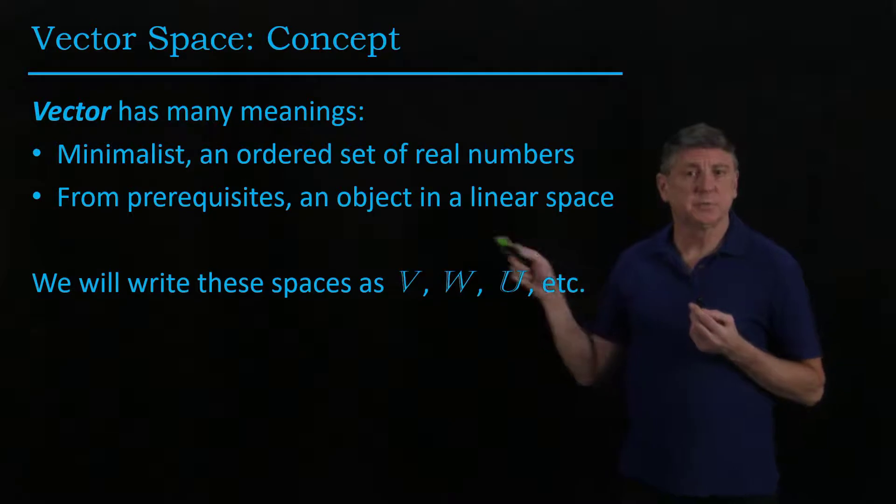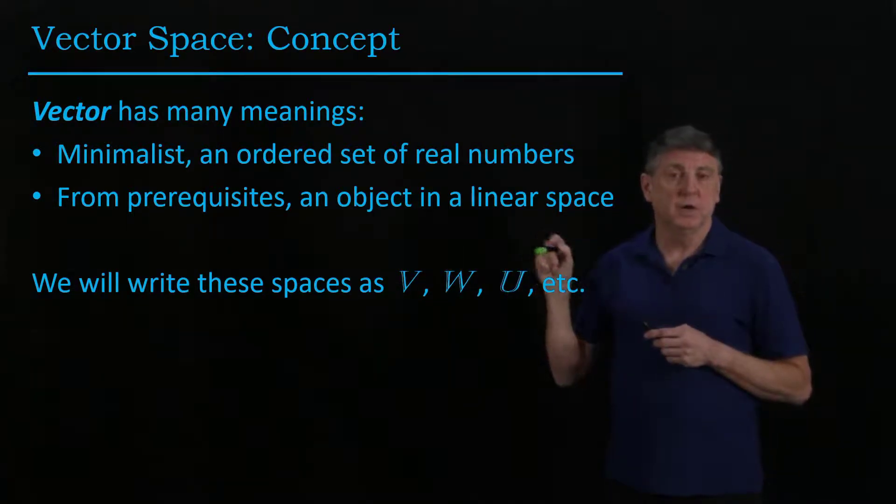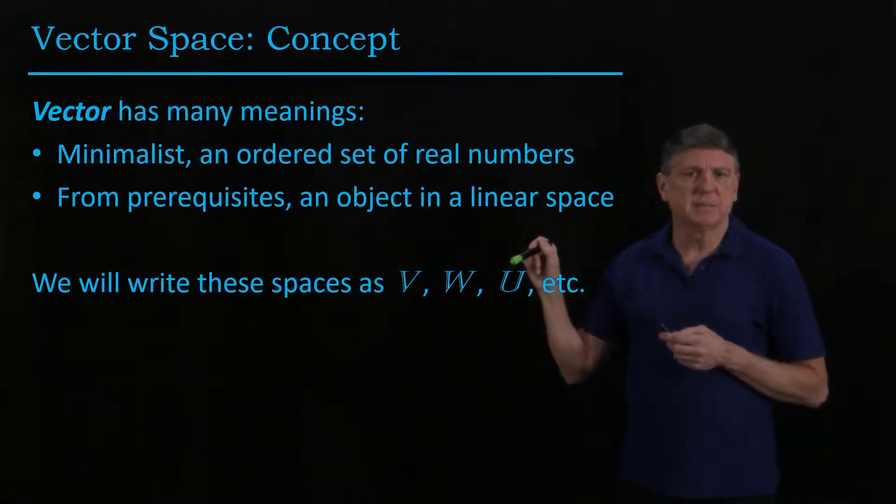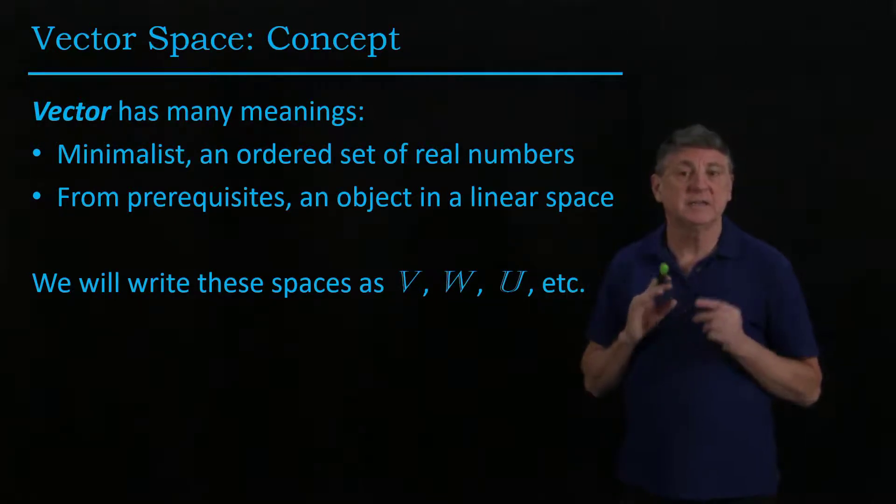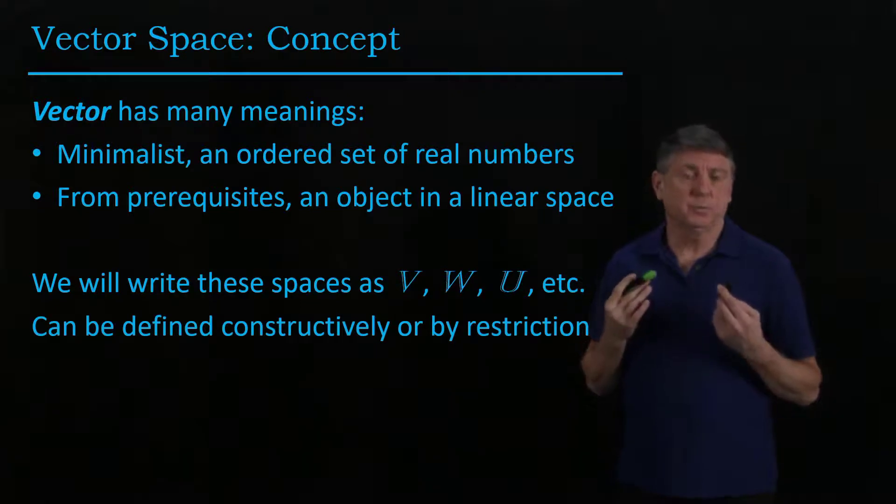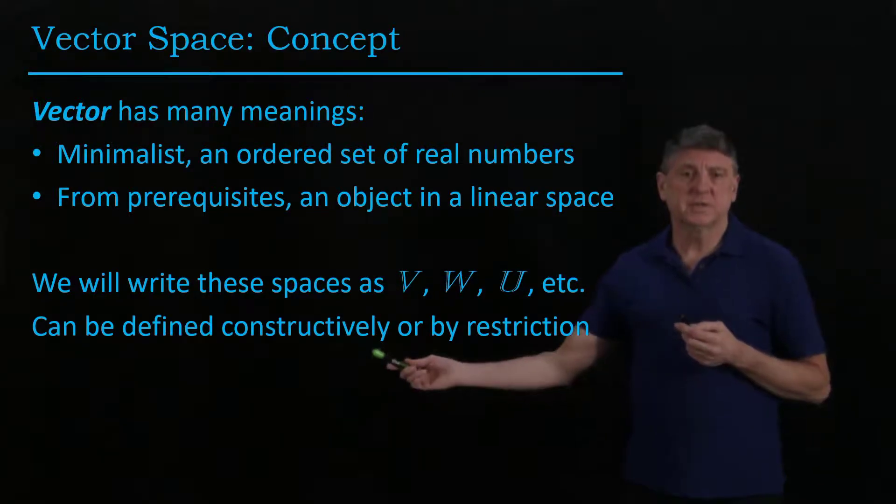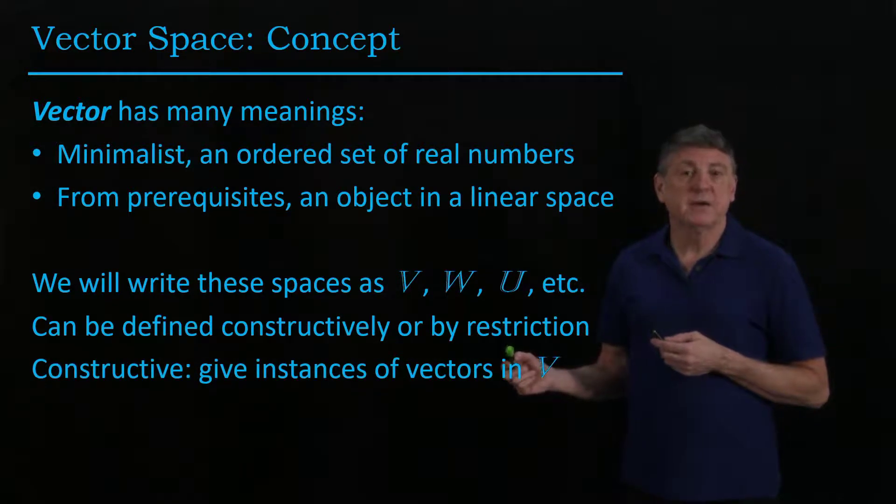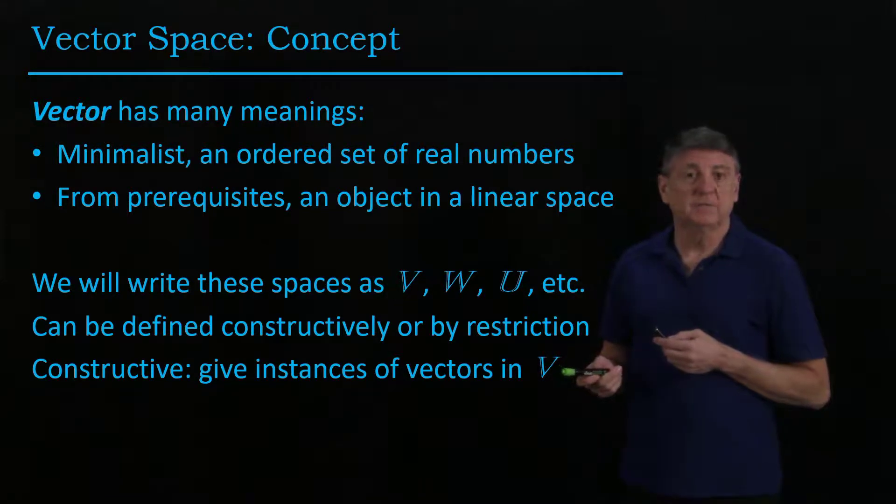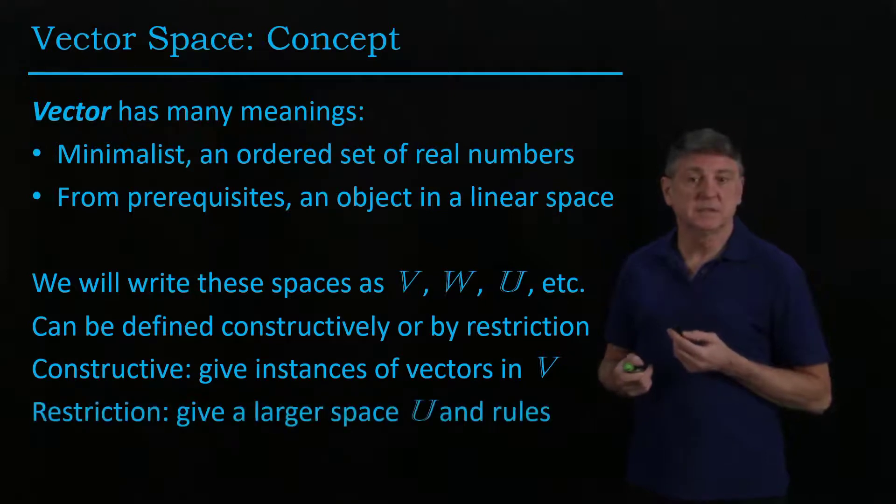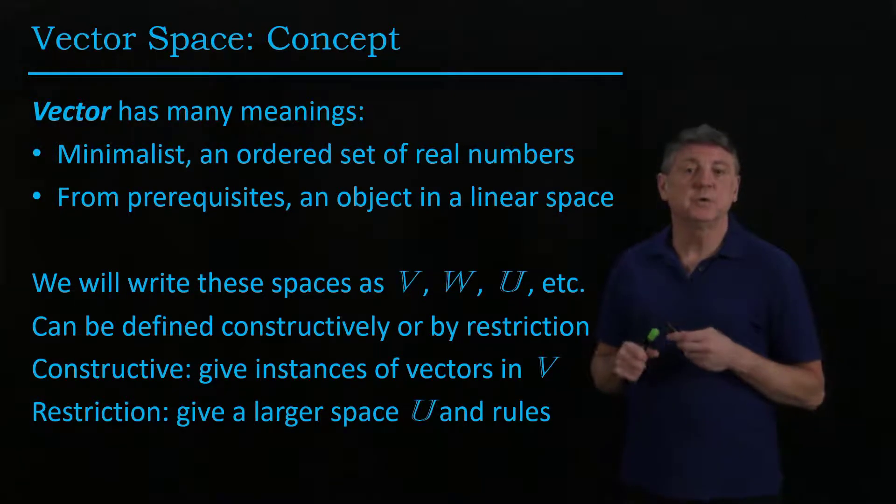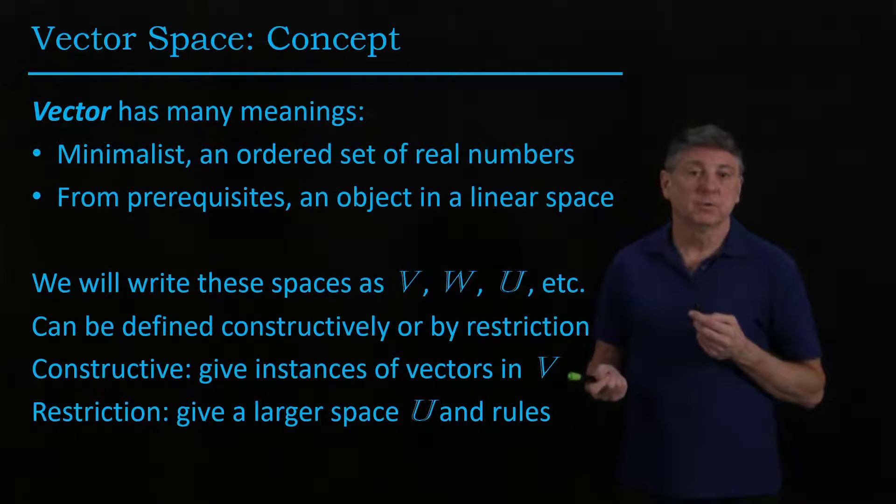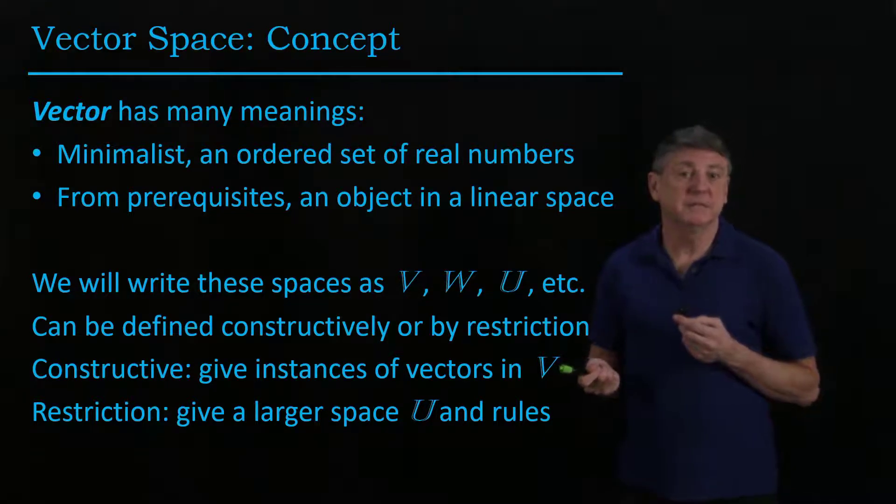The way that we'll write these is we'll use mainly the symbols V, W, and U. We'll use others if we need them, but we can largely get by with these three. And we'll put these double bars on them to indicate that these are spaces. And there are two ways that we'll frequently use to define them. One is constructively, and that is we'll give some examples and some rules. And the other is by restriction, where we'll say what isn't in the space.